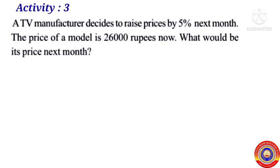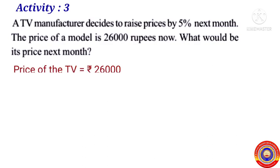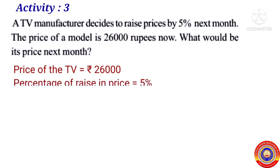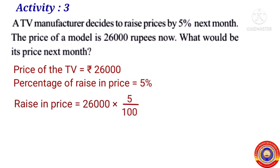Next, activity number three: a TV manufacturer decides to raise the price by 5 percentage next month. The price of a model is 26,000 rupees now. What would be its price next month? It is given that the price of the TV is equal to 26,000 rupees and the percentage of rise in price is equal to 5 percentage. Now we have to find out the rise in price, that is 5 percentage of 26,000 rupees.